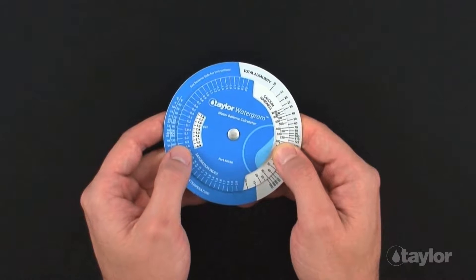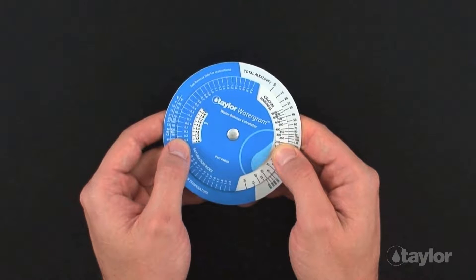Hold the calcium hardness and total alkalinity values where they are and turn the wheel until the arrow points to a pH value of 7.5 in the window.